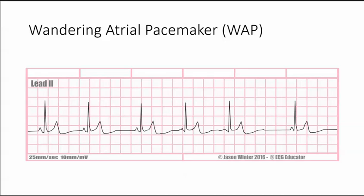In a wandering atrial pacemaker rhythm, the defining characteristic is that you have different types of P waves. This results from the gradual shifting of the dominant pacemaker between the SA node, the atria, and/or the AV junction.